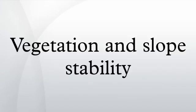Vegetation and slope stability are interrelated by the ability of the plant life growing on slopes to both promote and hinder the stability of the slope.